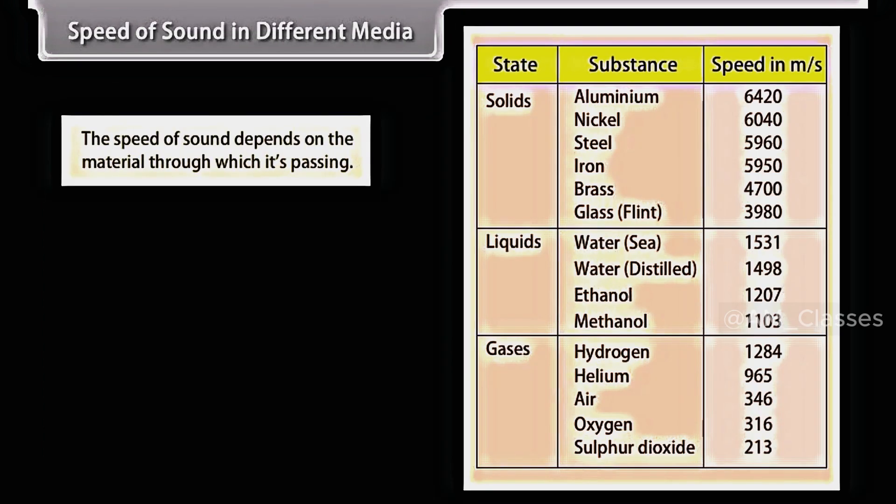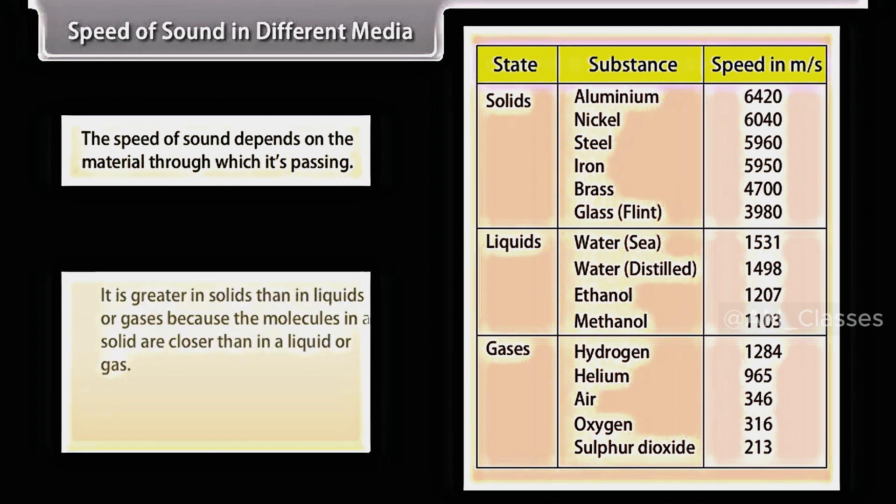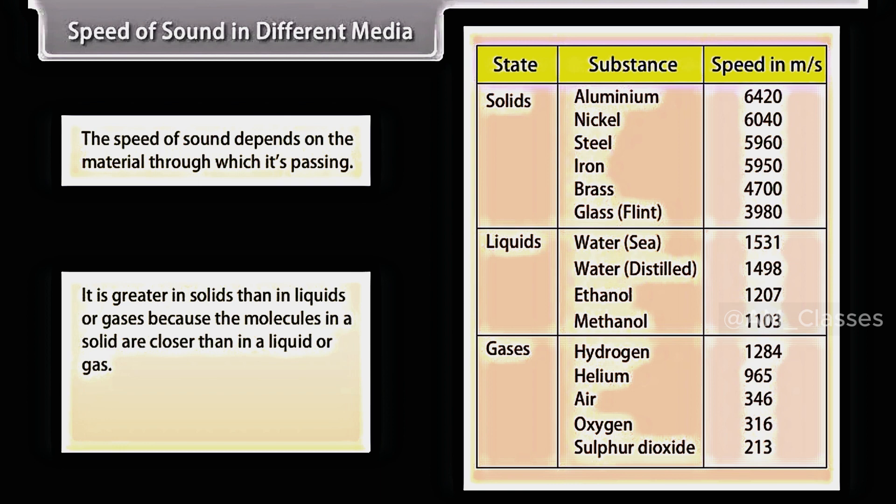Speed of sound in different media. The speed of sound depends on the material through which it is passing. It is greater in solids than in liquids or gases because the molecules in a solid are closer than in a liquid or gas. In this table, you can find the speed of sound in different media at 25 degrees Celsius.